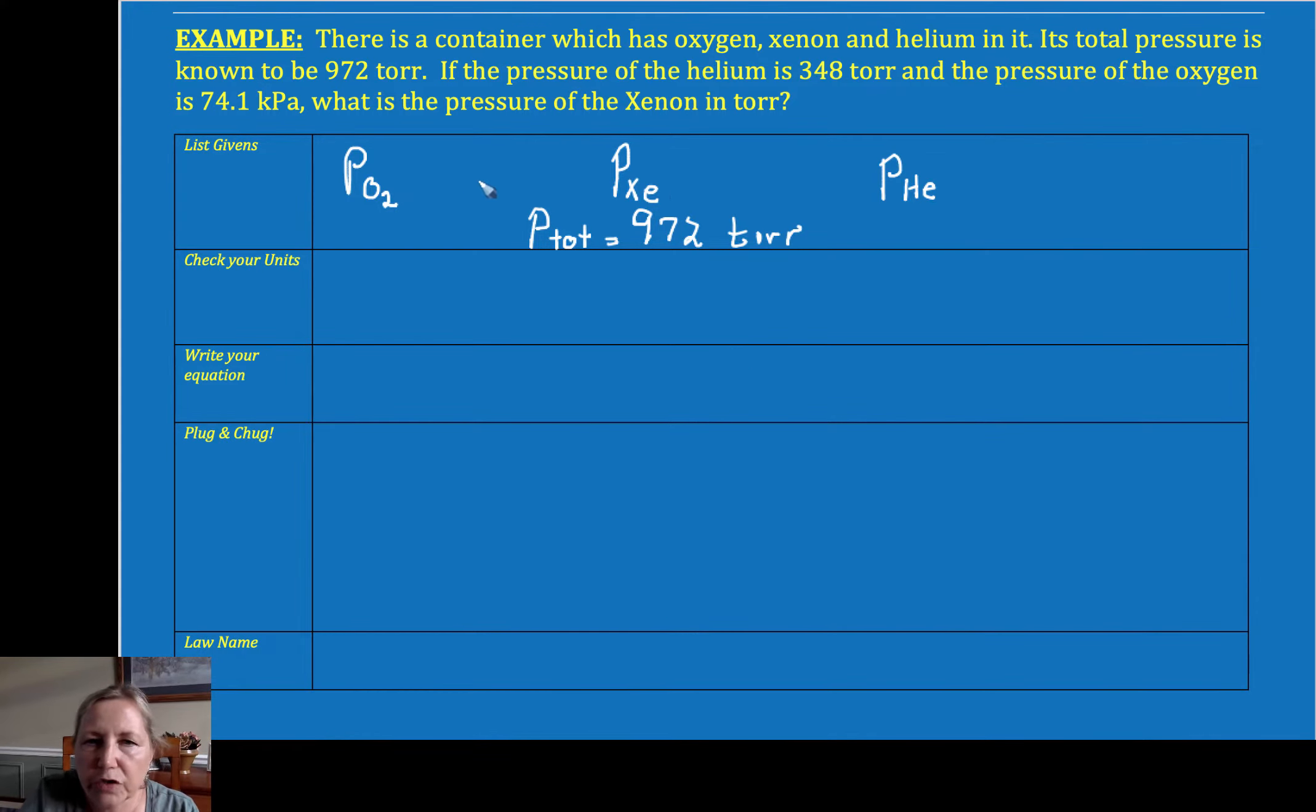So if the pressure of the helium is 348 torr, and my pressure of my oxygen is 74.1 kilopascals, what is my pressure of my xenon in torr? So that's listing my givens.